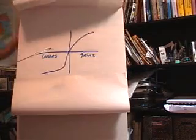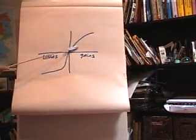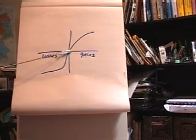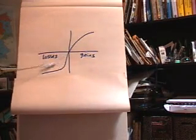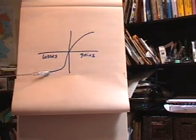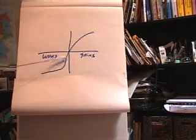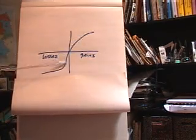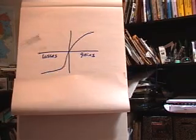So utility functions for gains are above the straight line, showing risk-averse behavior, and for losses, it's below the straight line. So people are risk-takers. And in fact, they said that this part here is steeper than this part here. So people are extreme risk-takers to avoid certain losses.